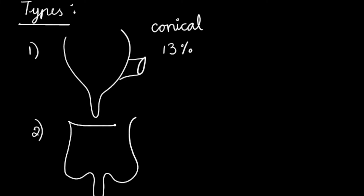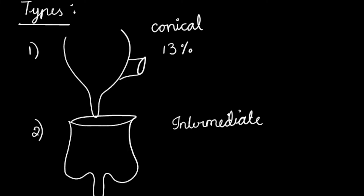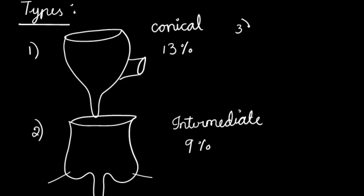The second type is called the intermediate type of cecum. It is seen in 9% of normal individuals. In this type, you can see both the right cecal pouch and the left cecal pouch, and the depression between them gives rise to the appendix.